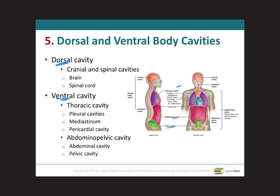The cranial cavity will house the brain. The vertebral cavity, which can also be called the spinal cavity, will house the spinal cord. It makes sense to call it the spinal cavity, but because it runs through the vertebral foramen, it can also be called the vertebral cavity.